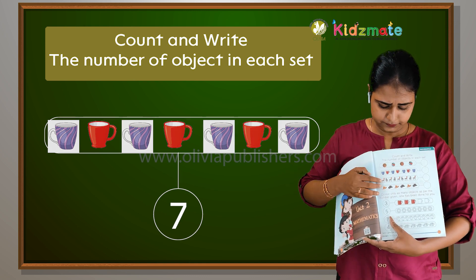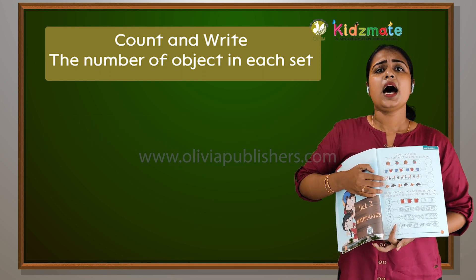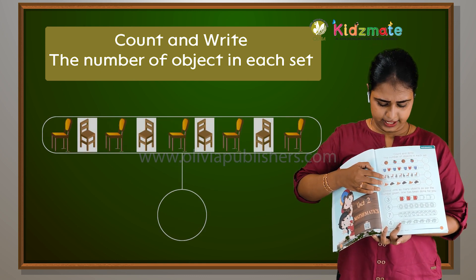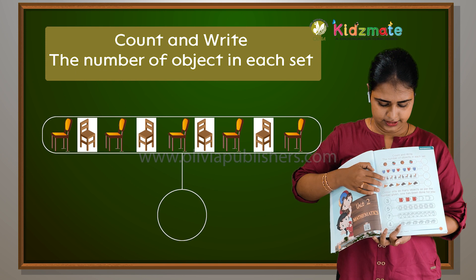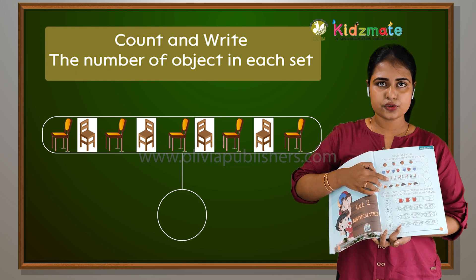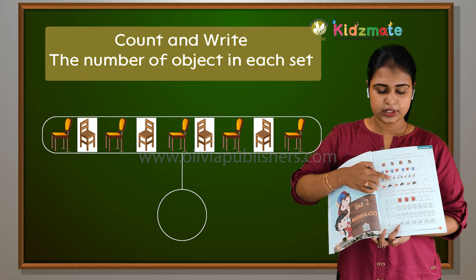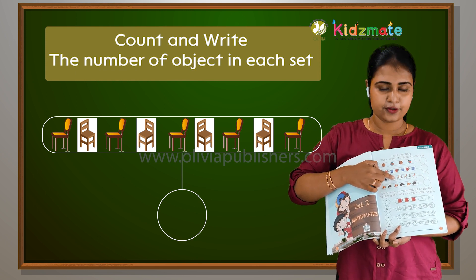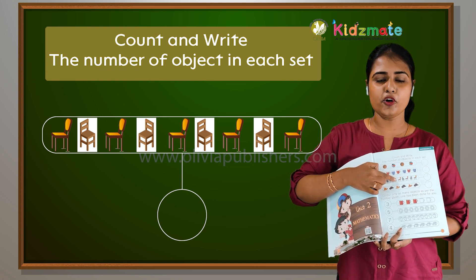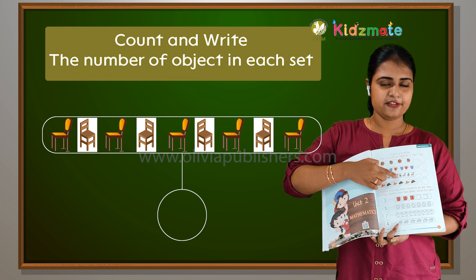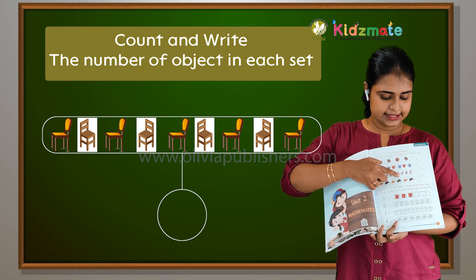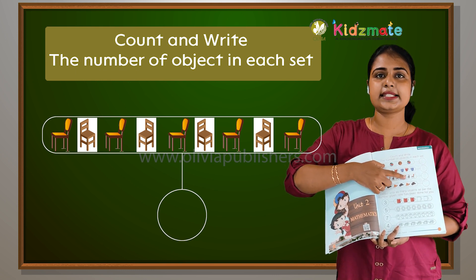How many chairs are there? 1, 2, 3, 4, 5, 6, 7. There are 7 chairs.